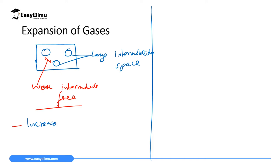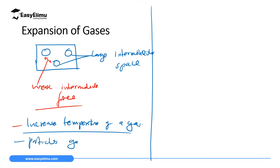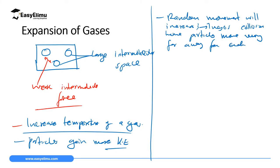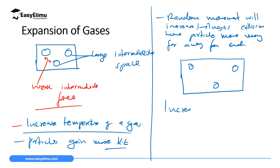...if you increase the temperature of a gas, the particles will gain more kinetic energy. When kinetic energy of the particles increases, then the random movement will increase. This increases the collision, hence particles move very far away from each other. When they move very far away from each other, they will occupy more volume — leading to an increase in volume.